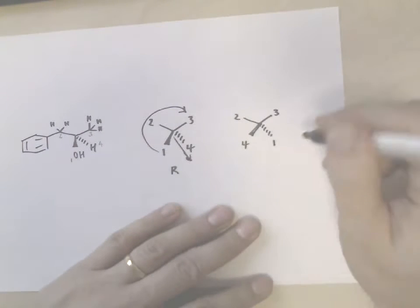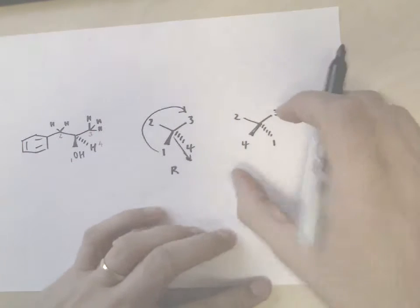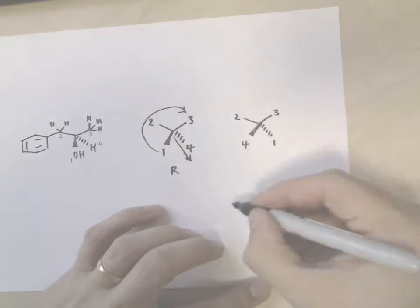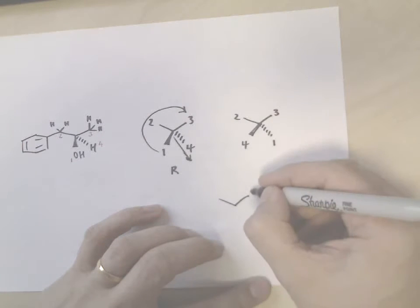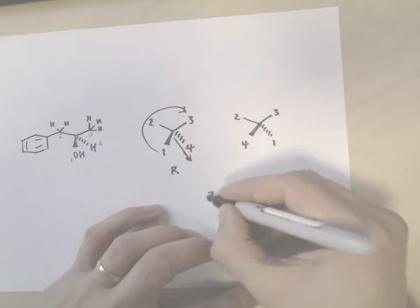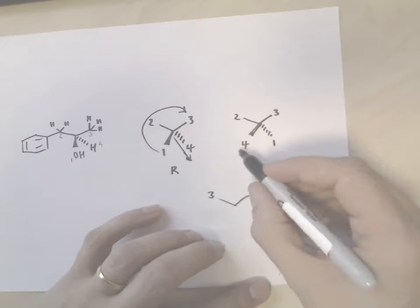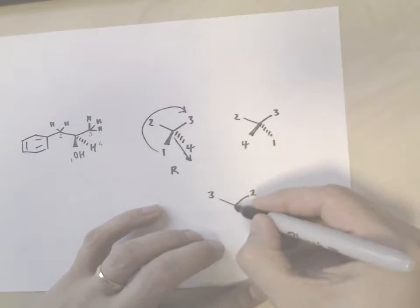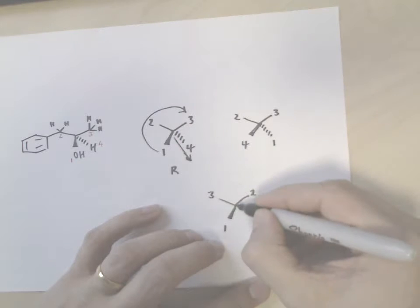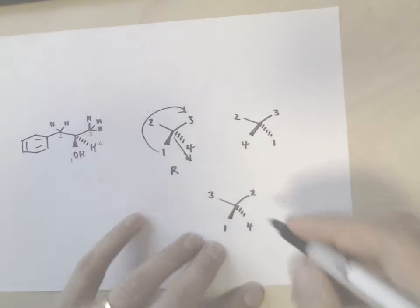So there's two ways you can do this. You can either redraw the molecule by flipping it over. So if I flip this over, group two comes onto the right-hand side now, group three over to the left, and by flipping it over, one comes forward and four goes back.